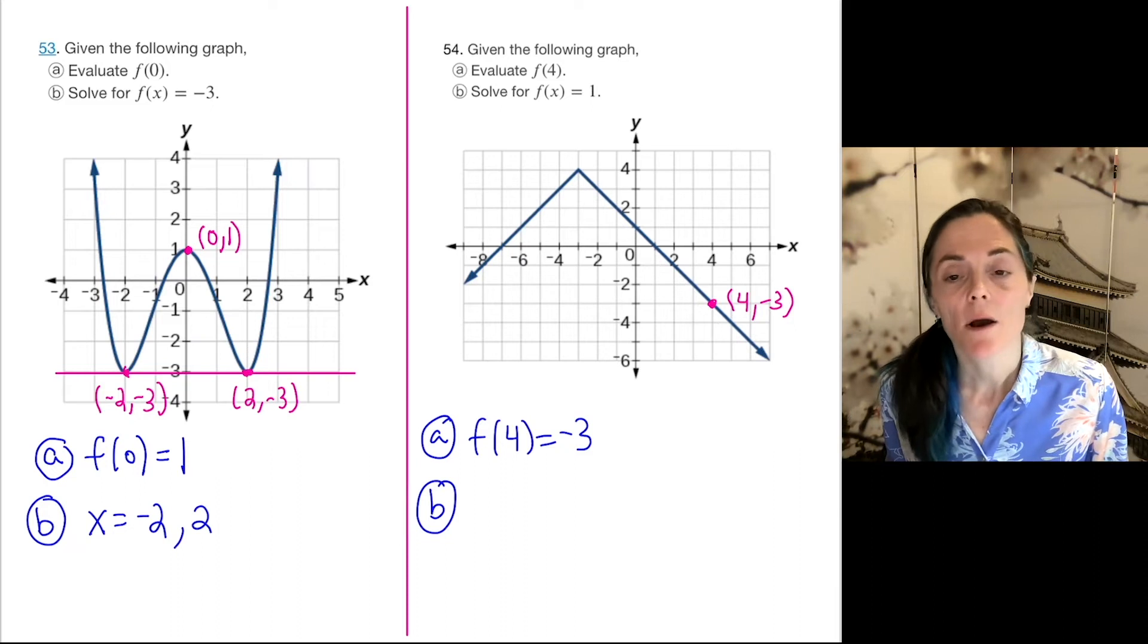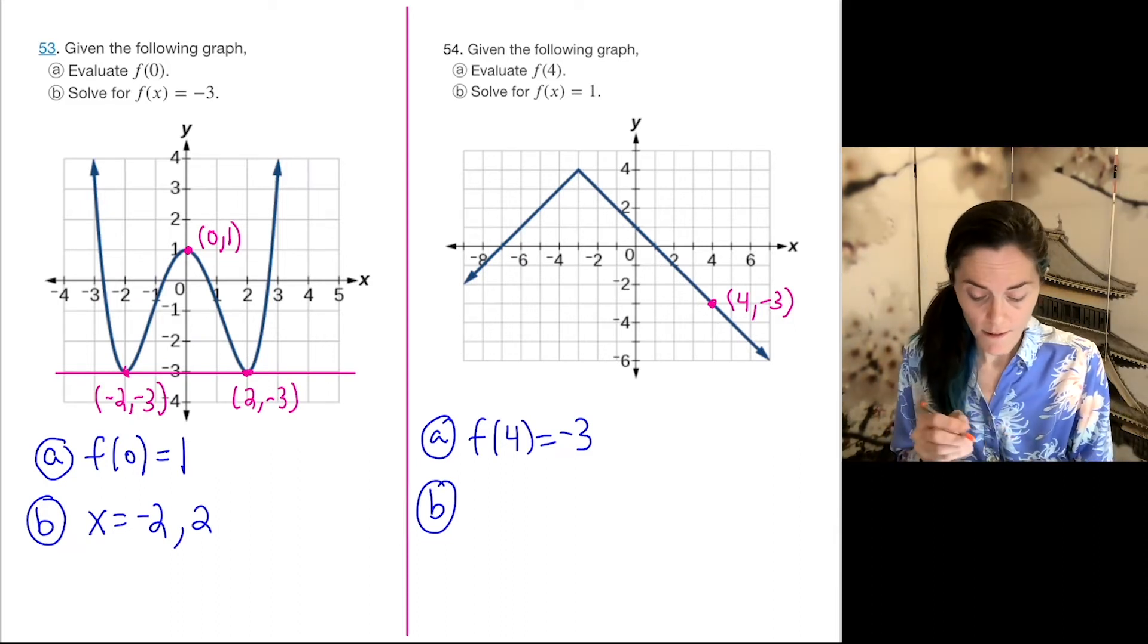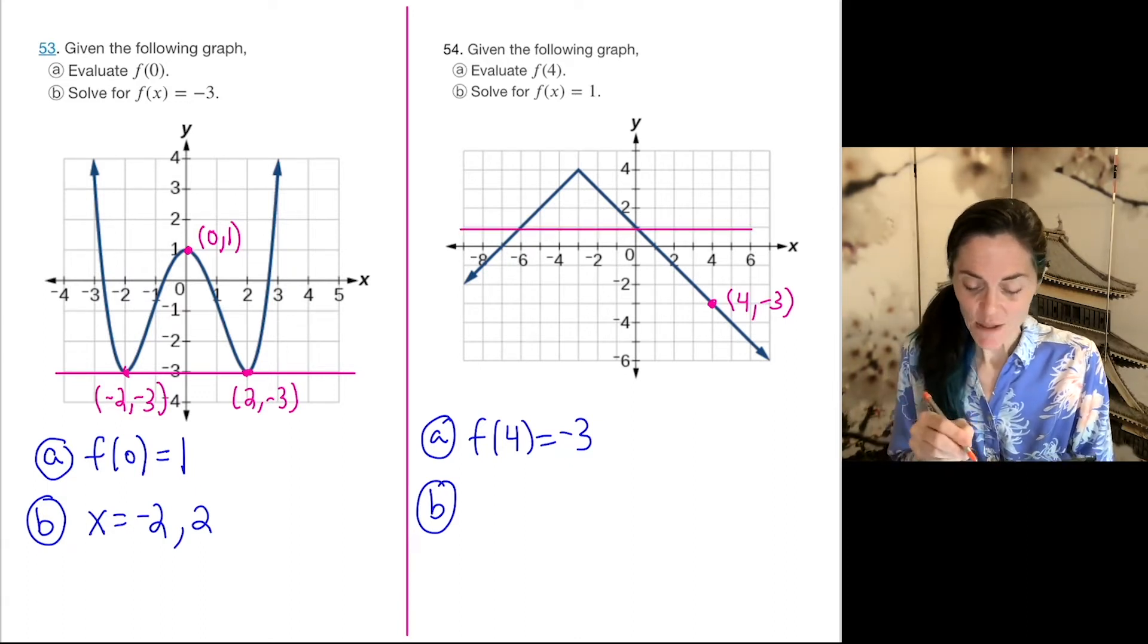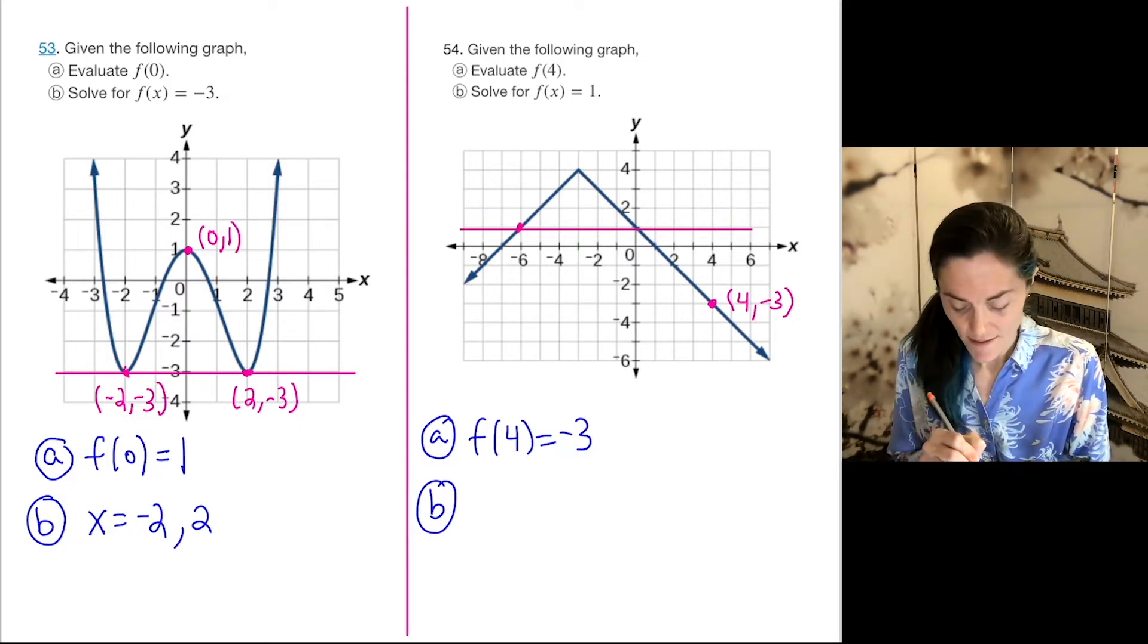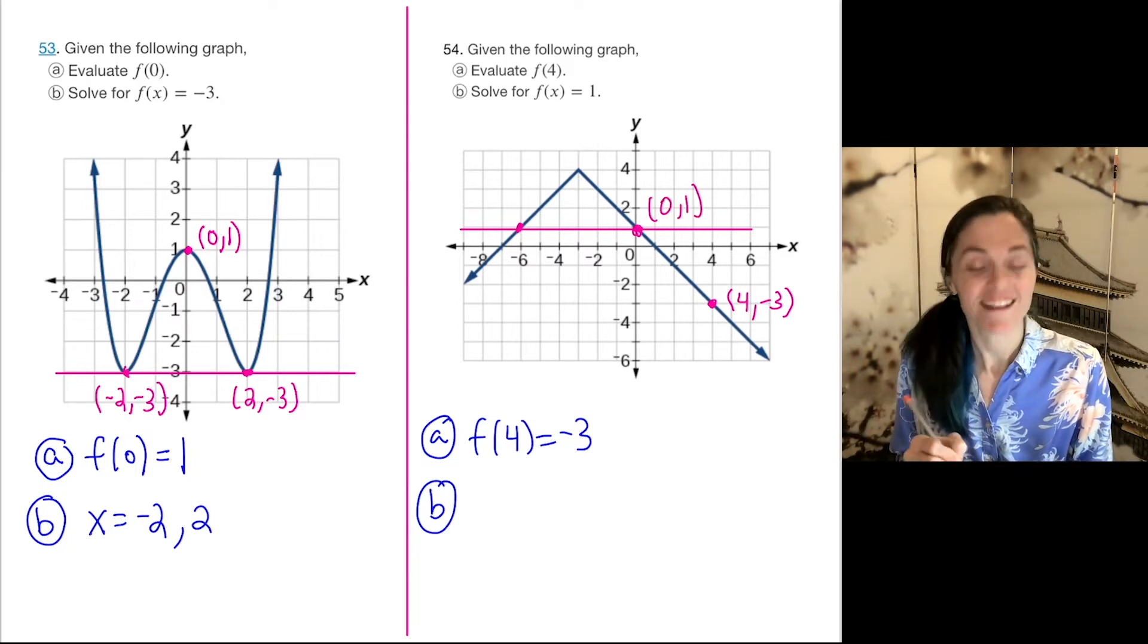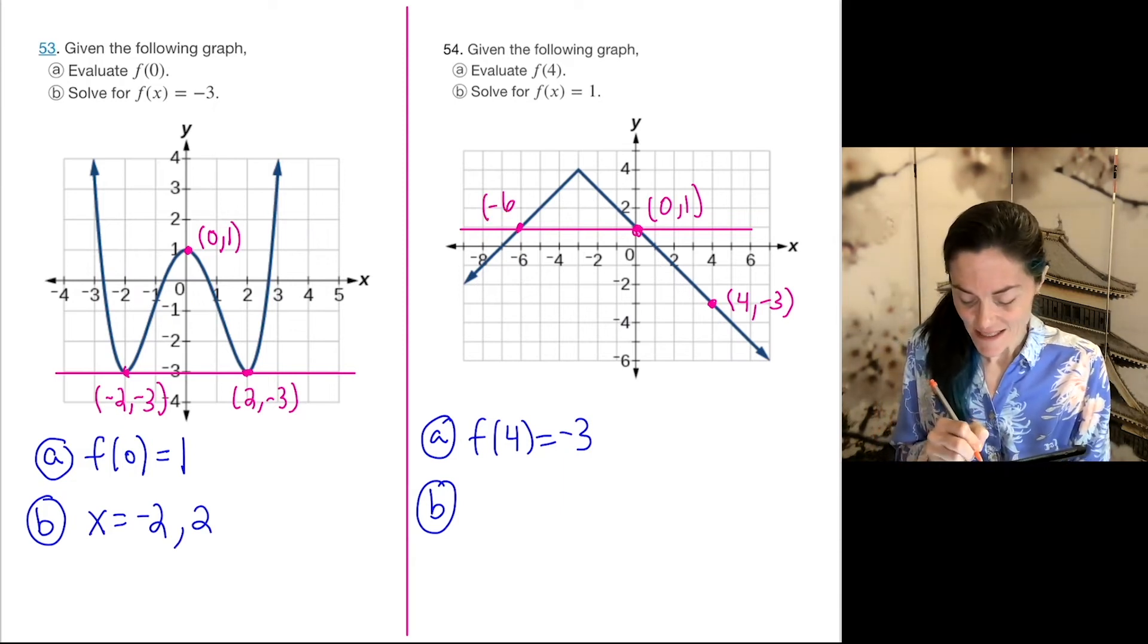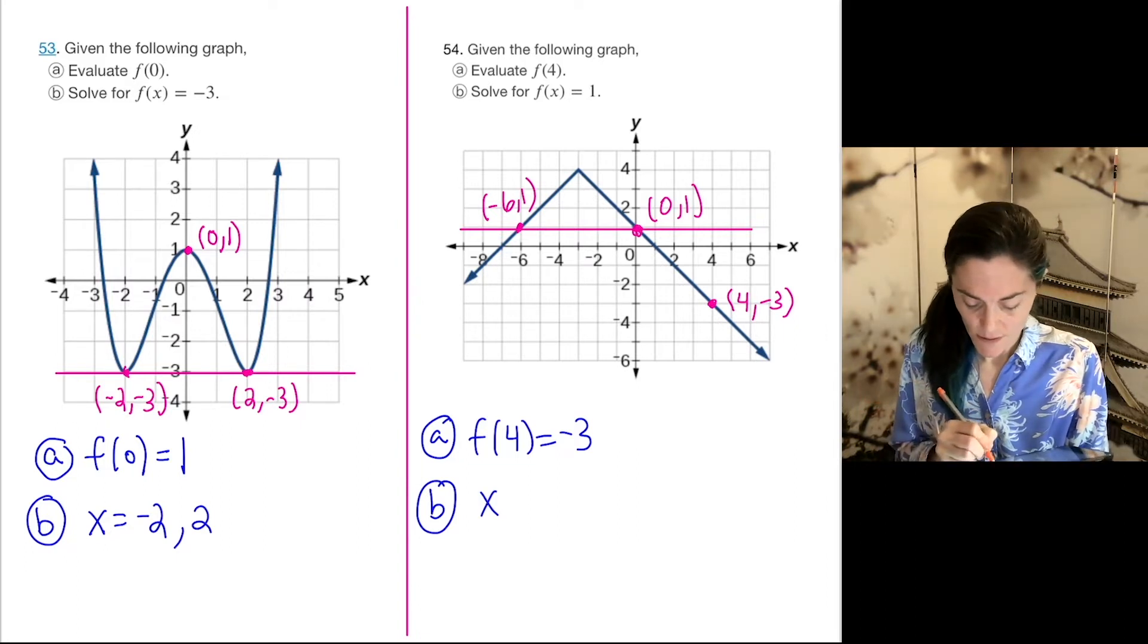Letter b, we want to solve f(x) equals 1. So let's draw our horizontal line y equals 1. And you note that this intersects the graph at two points, here and here. And let's write them. This point is 0 comma 1, and the other point is negative 6 comma 1. And so we have our two x values: negative 6 and 0.